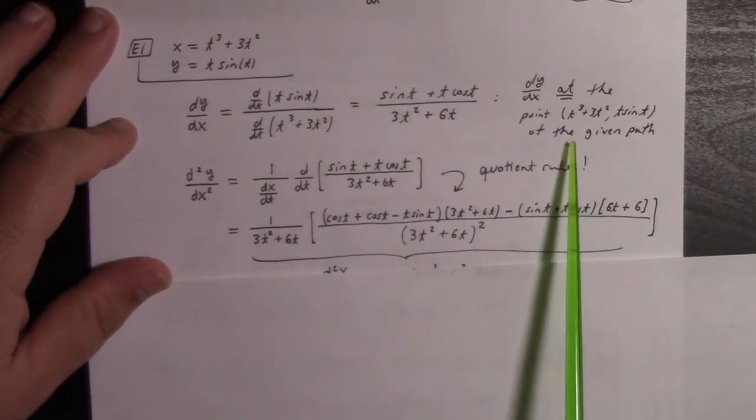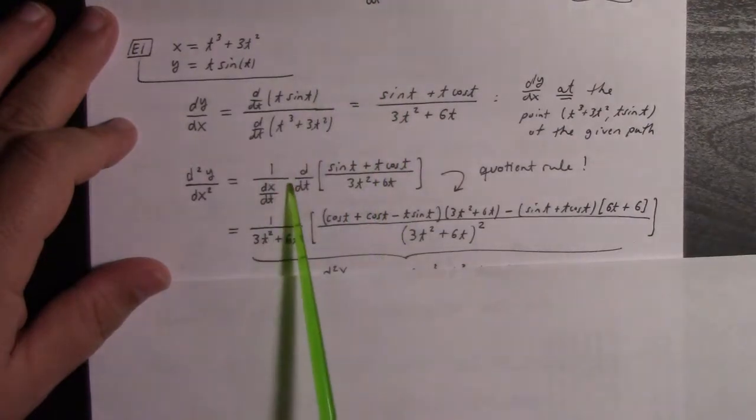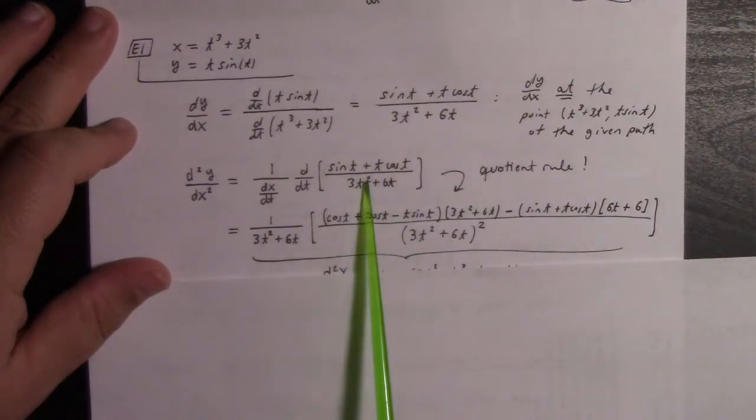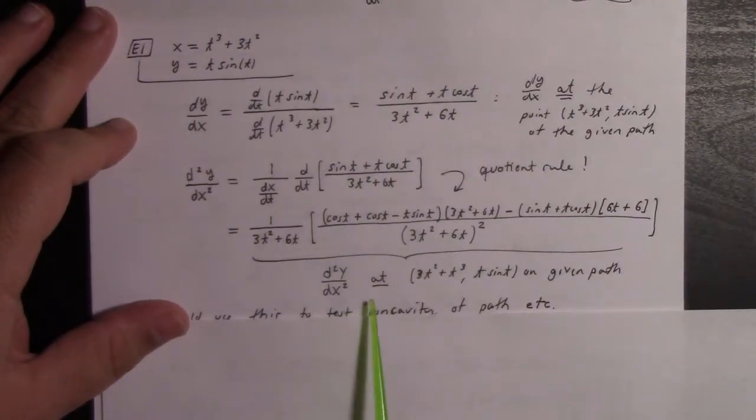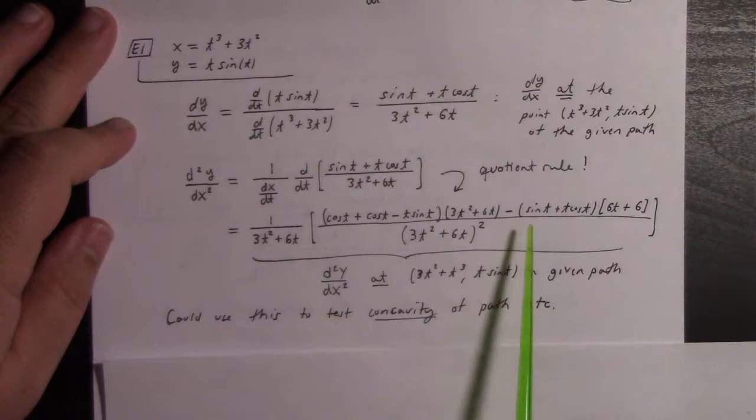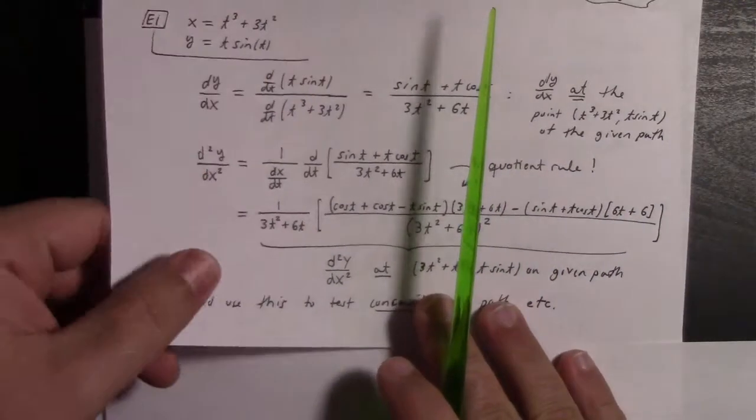To calculate the second derivative, we take 1 over dx/dt times the derivative with respect to time of dy/dx. Then you do the quotient rule, and there you have it. That's d²y/dx² at the point on the given path. We could use this expression to answer questions about the concavity of the path.